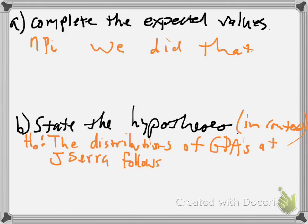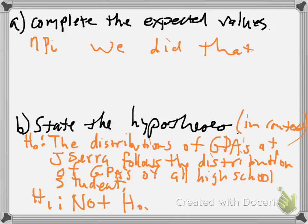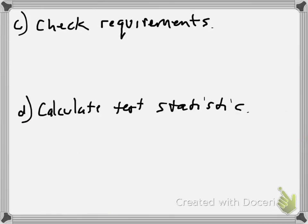The alternative, it would be really annoying and mean of me to make you write all this out again. But what is the alternative? It would be that the distribution of GPAs at J. Sarah does not follow the distribution of GPAs of all high school students. So I'm gonna let you get away with a nice one here, I'm gonna just say not H0. It's like everything that the null hypothesis is not. Check the requirements, pause it now, check the requirements.